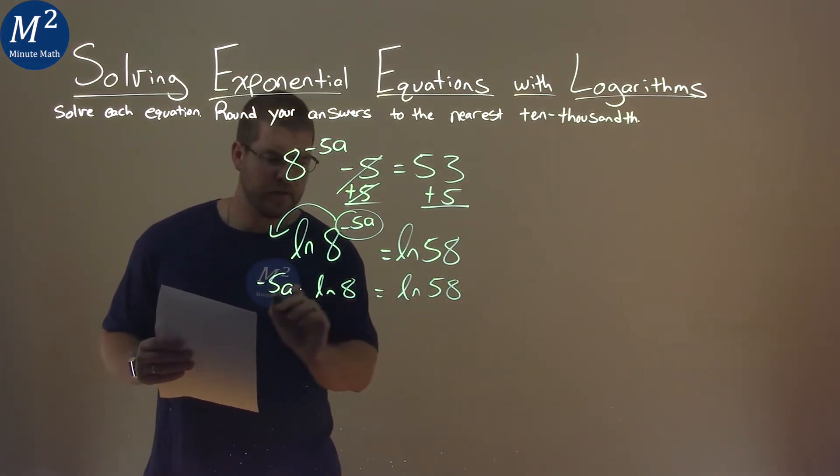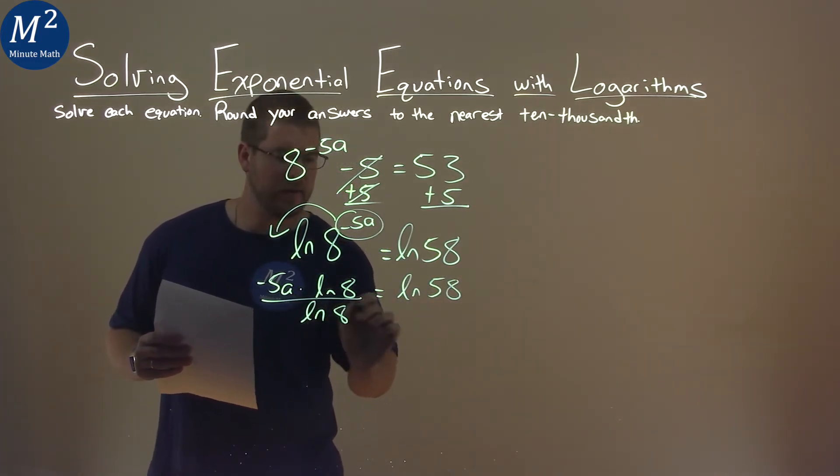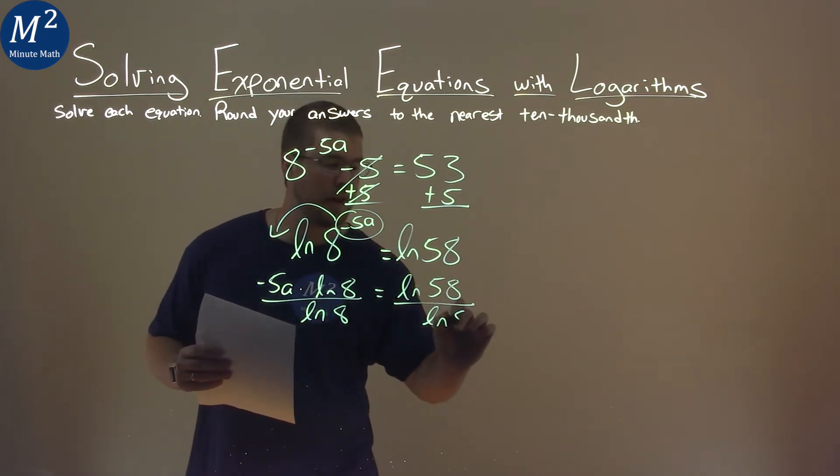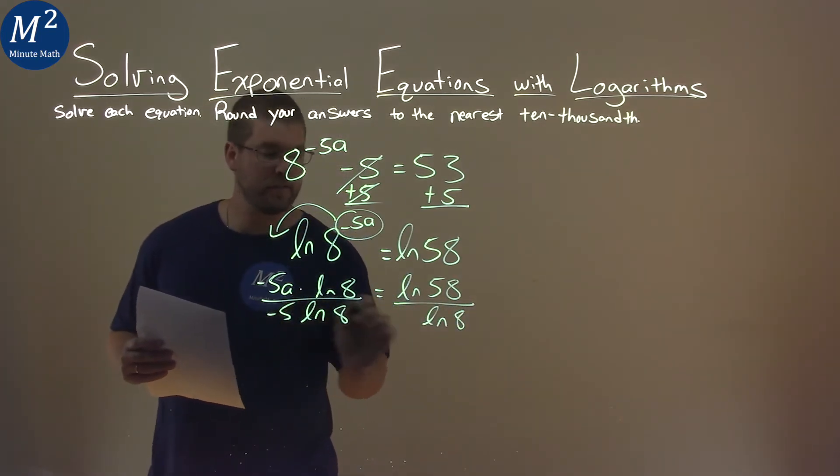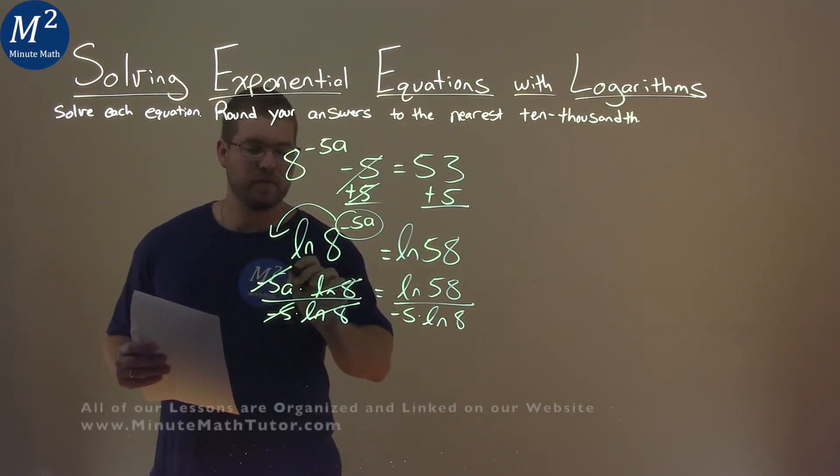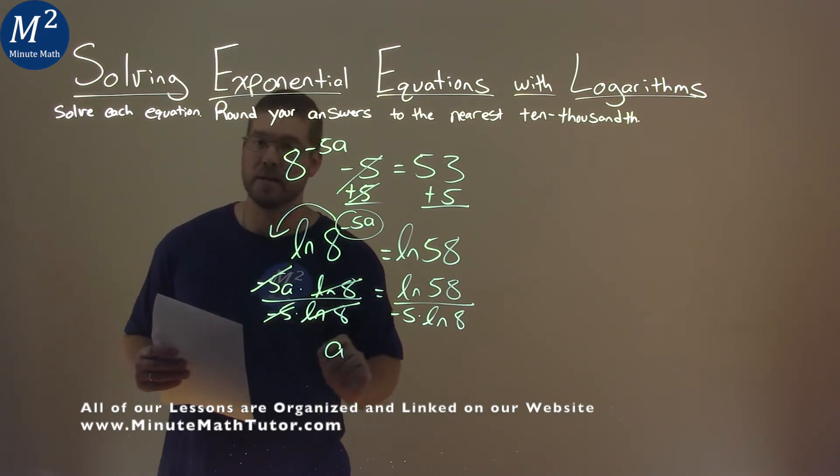From there, we can divide both sides by natural log of 8. And actually while I'm at it, let's divide both sides by negative 5 as well. Look what cancels: natural log of 8 cancels here, negative 5 cancels here, and we have a by itself.